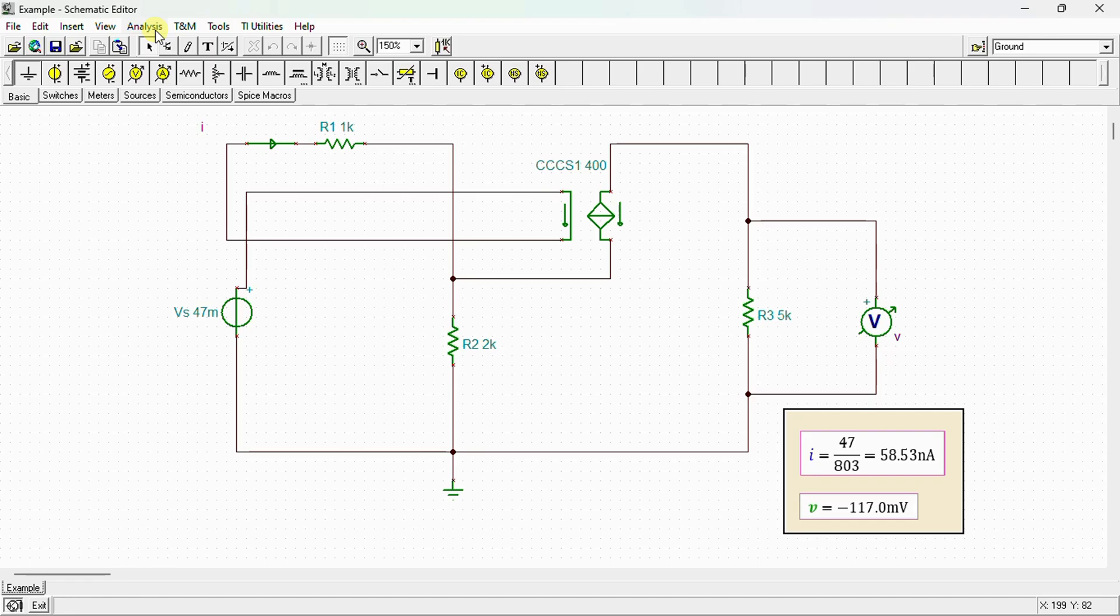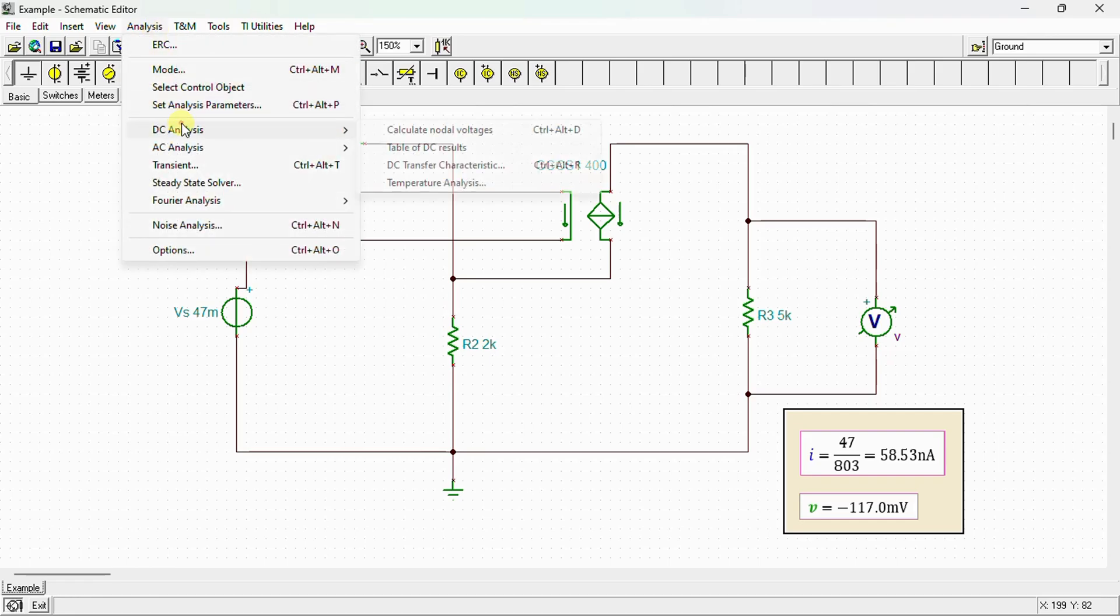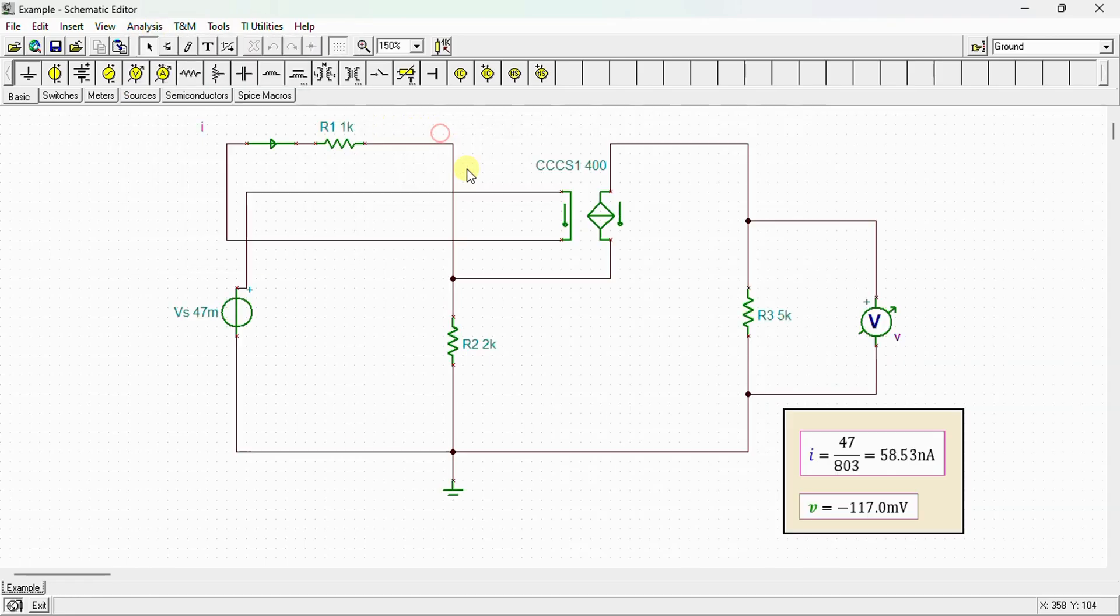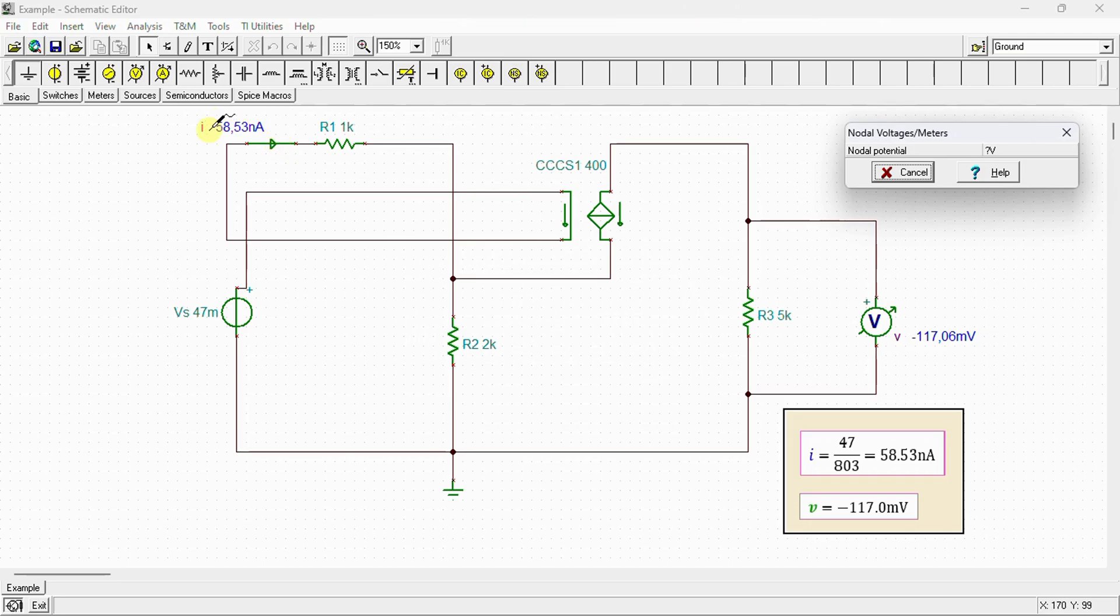Now let's move on to analysis. This analysis calculates nodal voltage. We can see here that the current i = 58.53 nanoamps is exactly the same value we have done by calculation, and the voltage v = -117.06 millivolt is also the same value we have done by calculation.